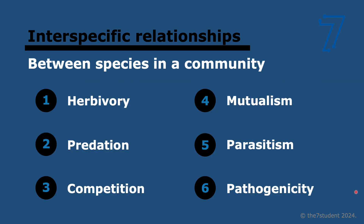Interspecific relationships happen between different species — members of different species in the community. There are six types: herbivory, where a consumer feeds on producers; predation, where one consumer kills another consumer; competition, where two species use the same resource; mutualism, where two species live in close association and both benefit; parasitism, where one species lives on or inside another and the host is harmed while the parasite benefits; and pathogenicity, where one species lives inside another and causes disease in the host.